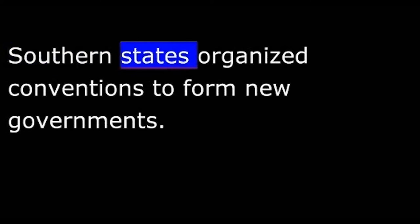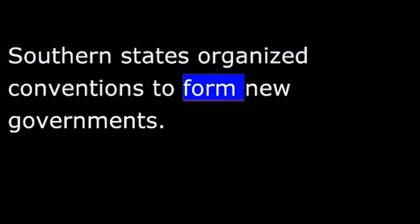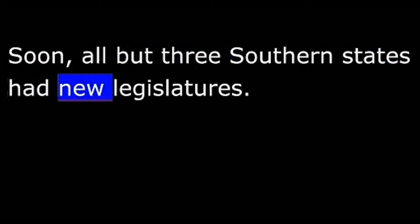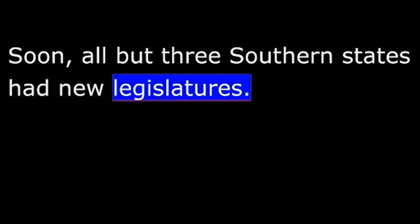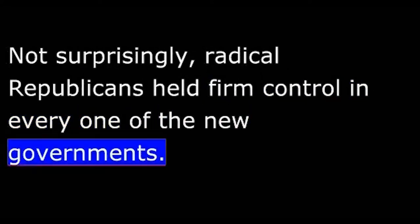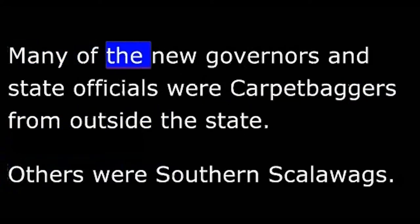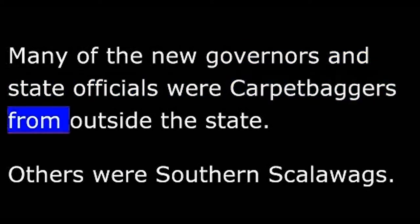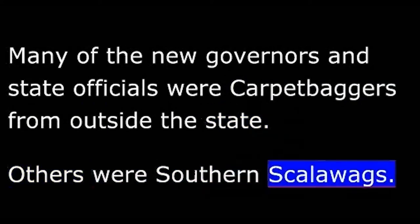Southern states organized conventions to form new governments. Soon, all but three Southern states had new legislatures. Not surprisingly, radical Republicans held firm control in every one of the new governments. Many of the new governors and state officials were Carpetbaggers from outside the state. Others were Southern Scalawags.